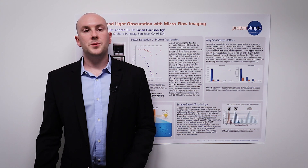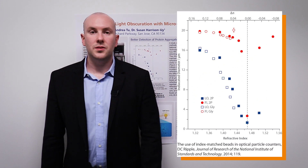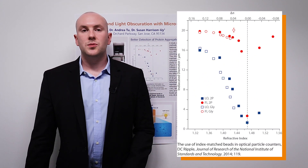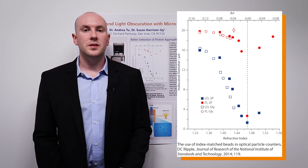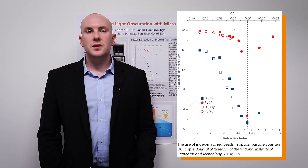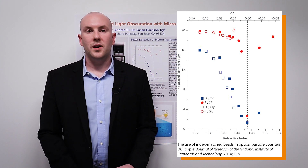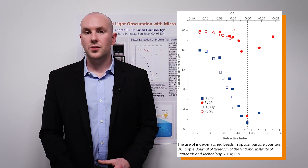One of the main advantages that MFI provides over light obscuration is a more sensitive detection threshold. In a study done by the National Institute of Standards and Technology, polystyrene beads were measured by both MFI and light obscuration in matrices of varying refractive index. The dotted line vertically intersecting the chart represents the point at which the refractive index of the beads and the matrix is perfectly matched — where the beads have become almost optically invisible to both systems.